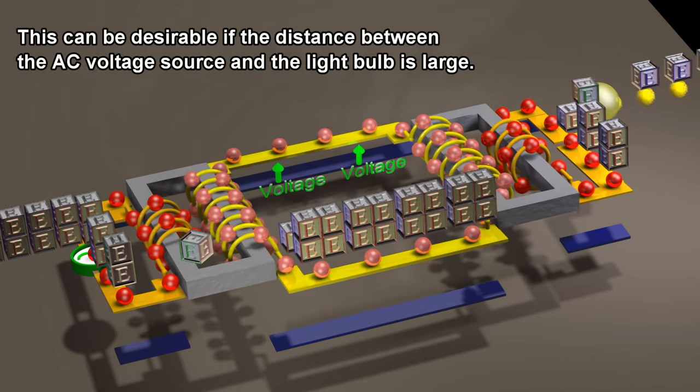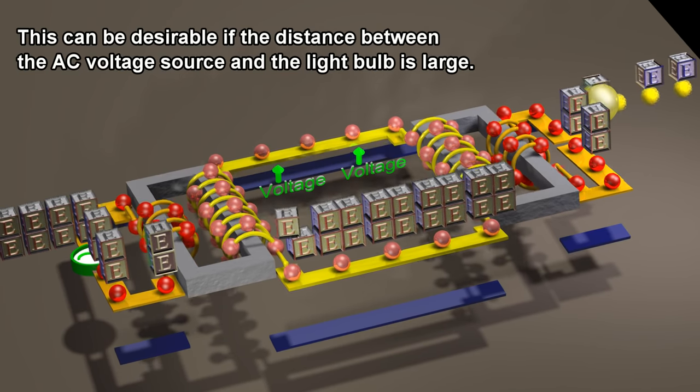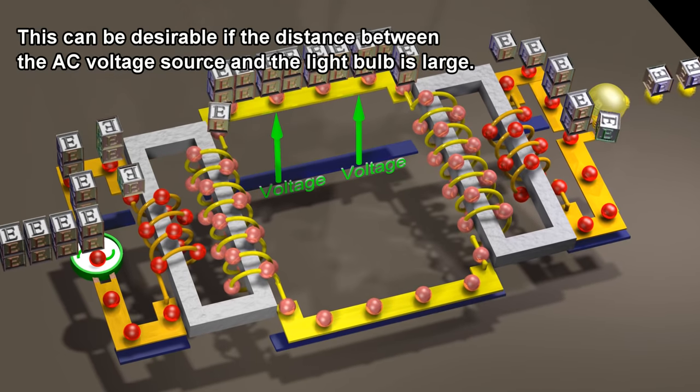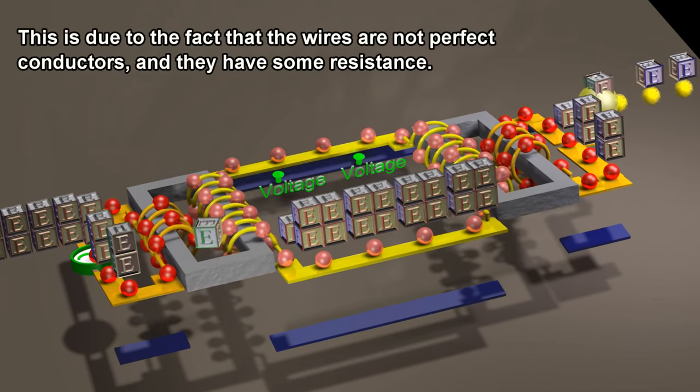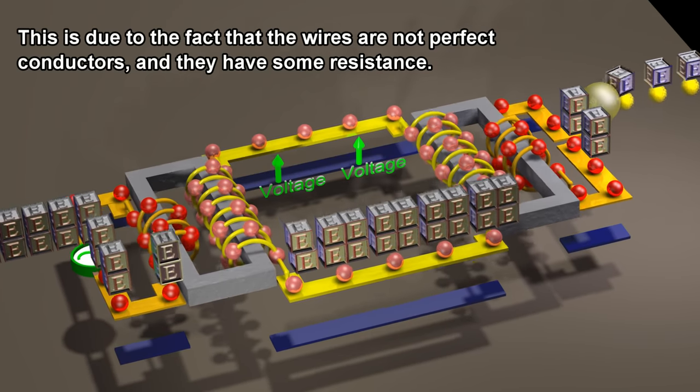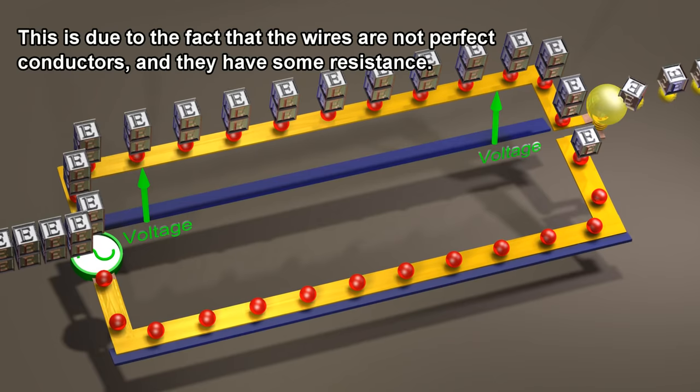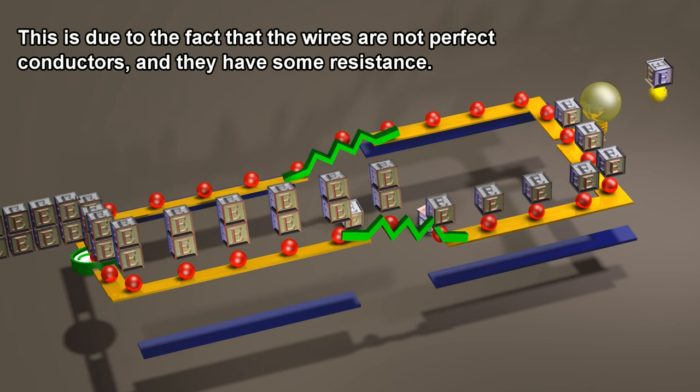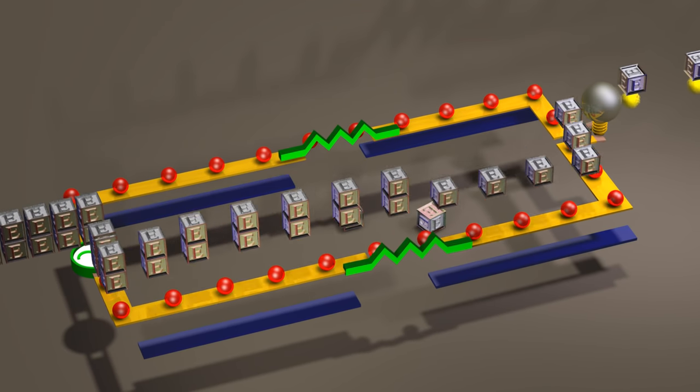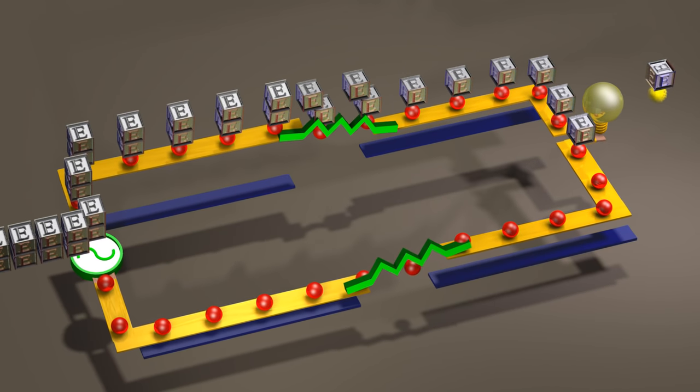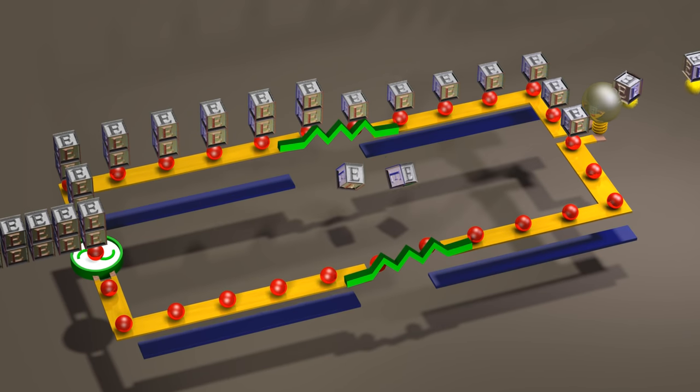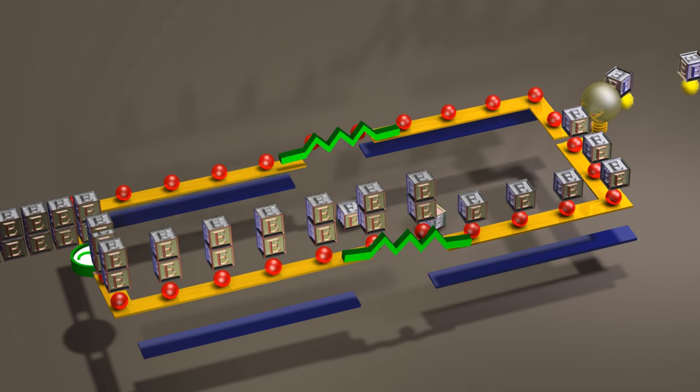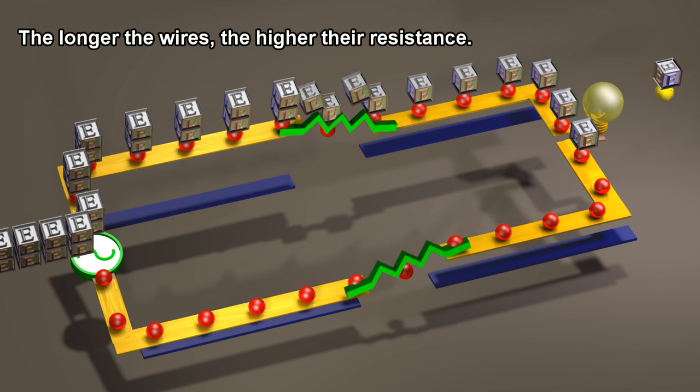This can be desirable if the distance between the AC voltage source and the light bulb is large. This is due to the fact that the wires are not perfect conductors, and they have some resistance. The longer the wires, the higher their resistance.